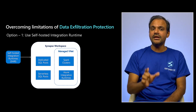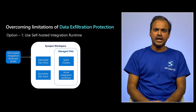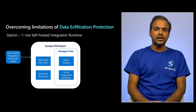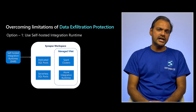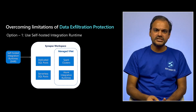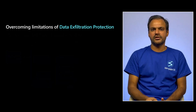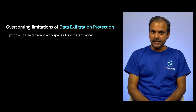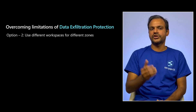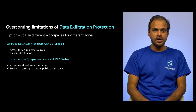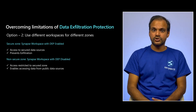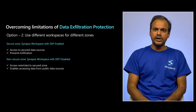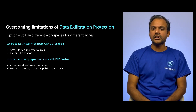Currently this is not possible in a managed VNet. SHIR can be leveraged for many scenarios where the activity is executed on some other compute resource but the pipeline is only used to orchestrate, dispatch, and monitor — such as calling a REST API or executing an AML pipeline. In some cases, SHIR is not a viable option, such as for Spark pools. In those cases, it is a good practice to isolate secure zones and non-secure zones: create different Synapse workspaces and resources for secure zones with DEP enabled, and different Synapse workspaces for non-secure zones with DEP disabled. That way, you can still control your sensitive data with DEP and work around its limitations.